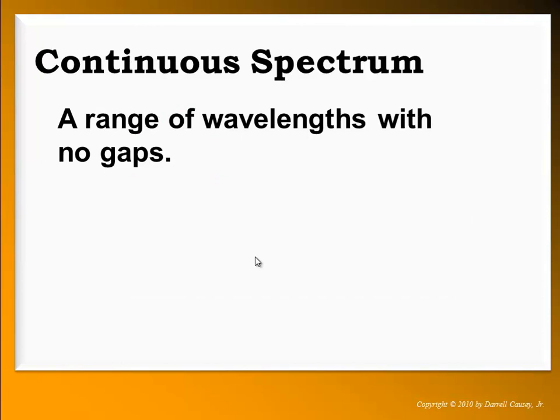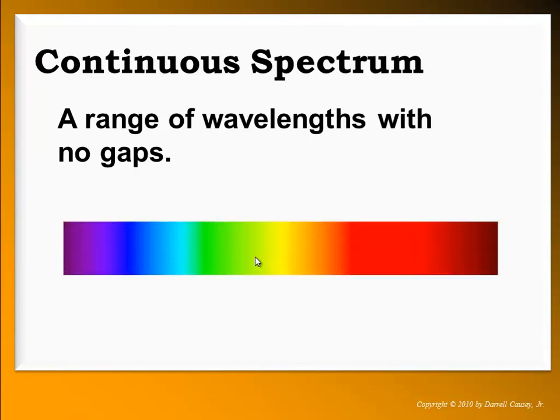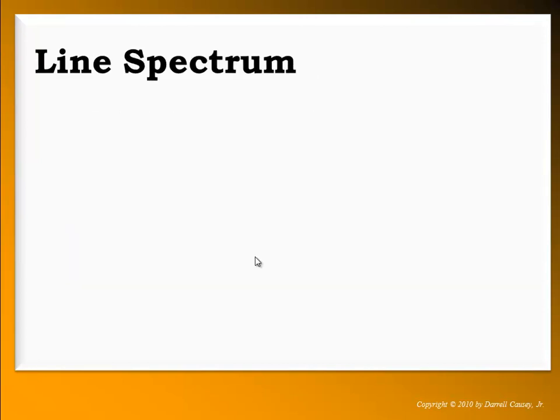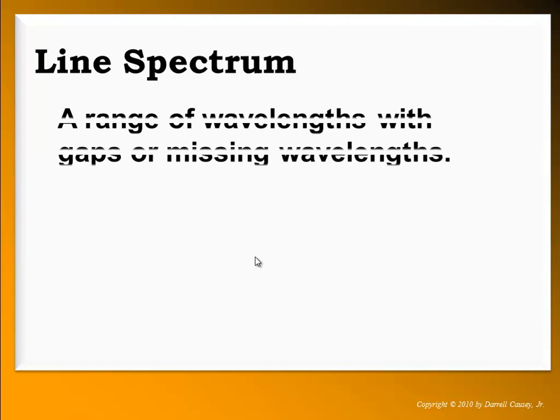That brings us to the continuous spectrum, which is a range of wavelengths with no gaps. That's what we see when we usually break sunlight into its colors. But what's really important to us is the line spectrum — a range of wavelengths with gaps or missing wavelengths.